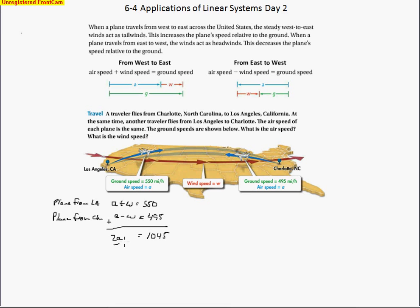So all we have to do now is divide by two. And we'll have the air speed. So it looks like the air speed is a decimal. 522.5 miles per hour. So we know the air speed, or the speed of the plane, air speed equals 522.5 miles per hour.